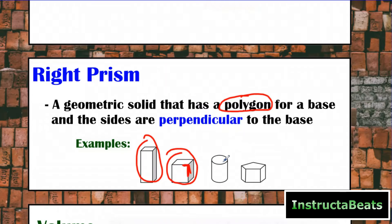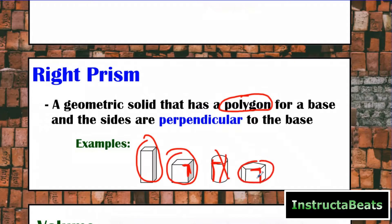Now here, this is a cylinder. This is not a right prism. The sides do seem to kind of form a right angle or would be perpendicular right there. However, a circle is not a polygon because a polygon has to have straight sides. And then here we have a pentagonal prism — it has a pentagon for the base, and you can see that the sides and the base form a right angle when they meet. So this would also be a right prism.